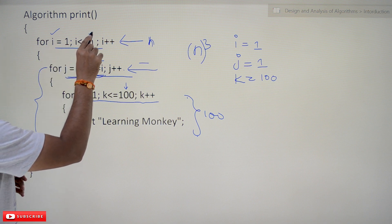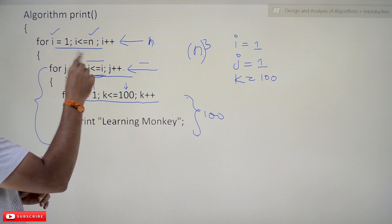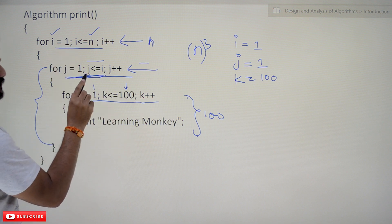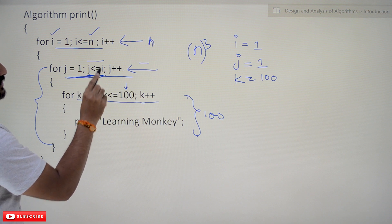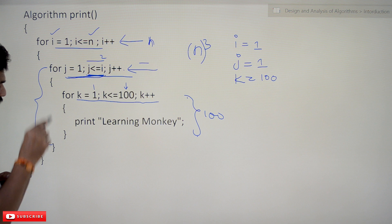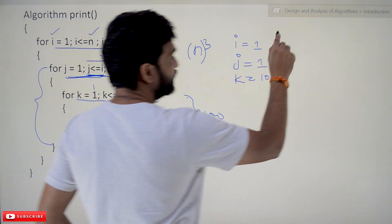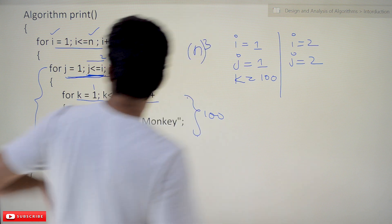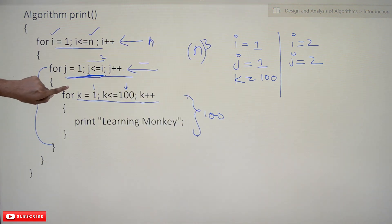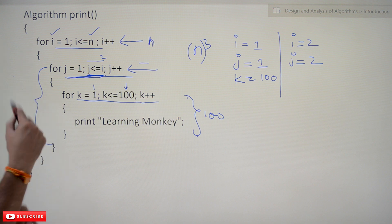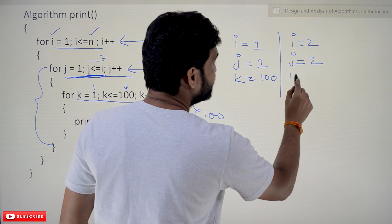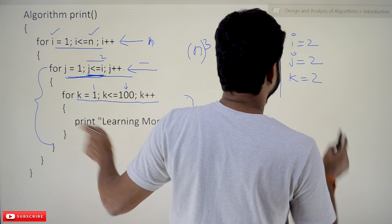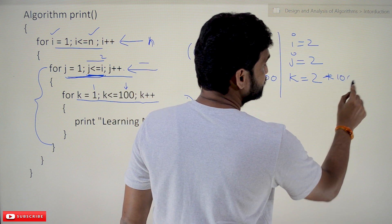When i = 2: j less than or equal to i means the j-loop iterates 2 times. Every time we enter the j-loop, the k-loop iterates 100 times. So the k-loop runs 2 × 100 = 200 times. This is how we must analyze algorithms — just seeing three for loops does not always mean n cubed.